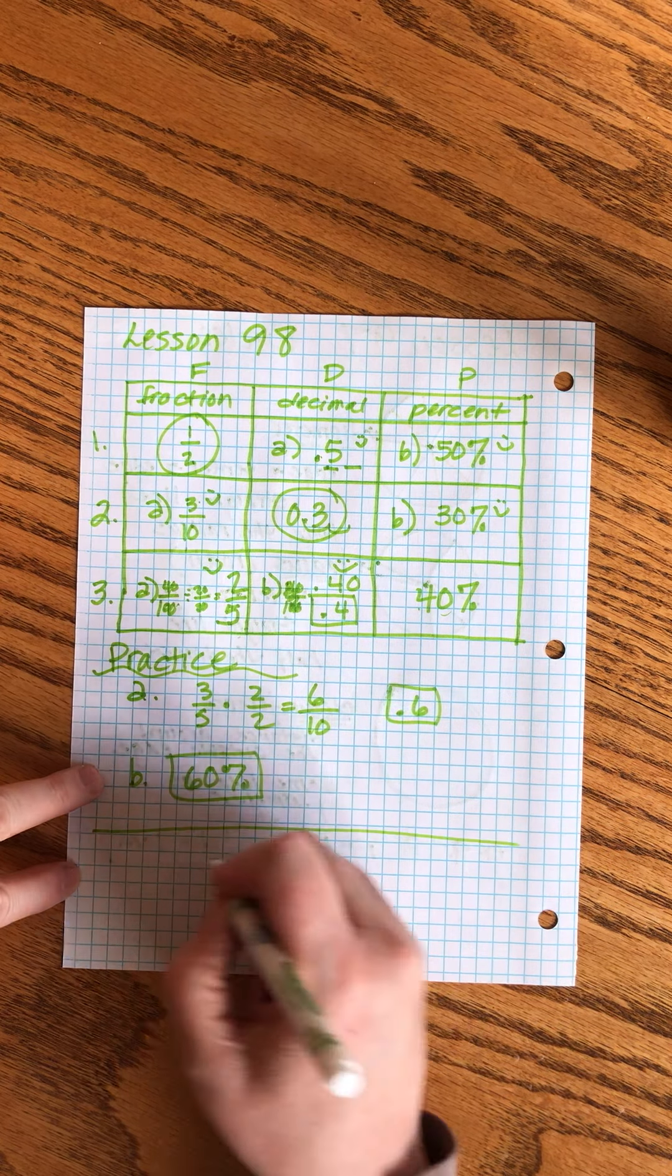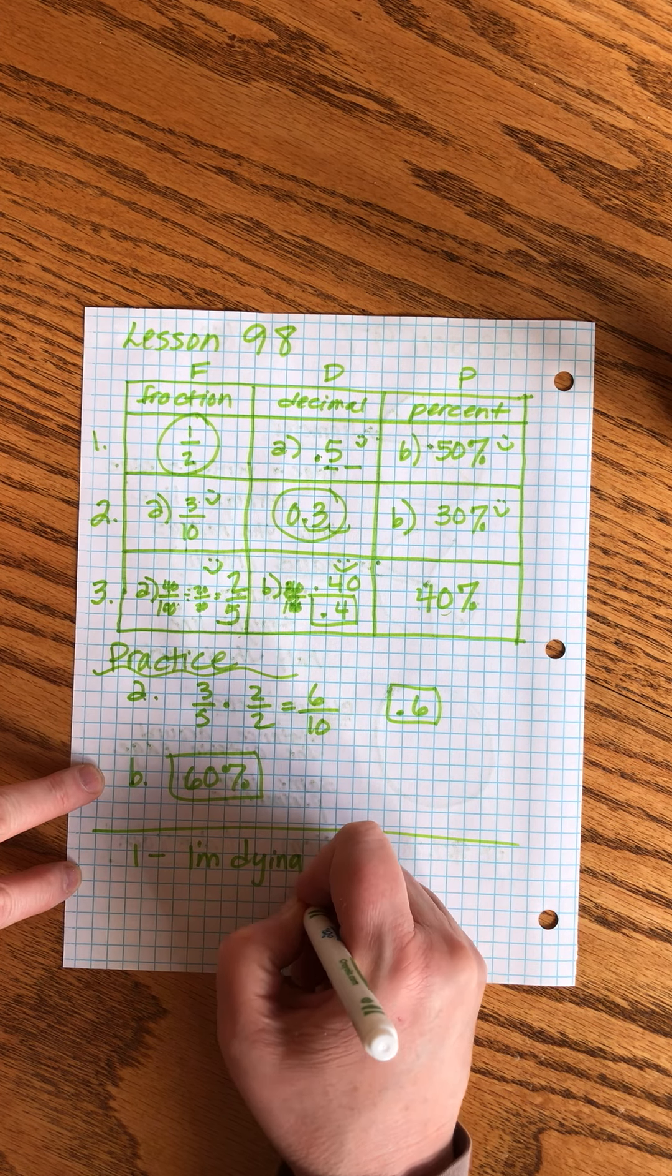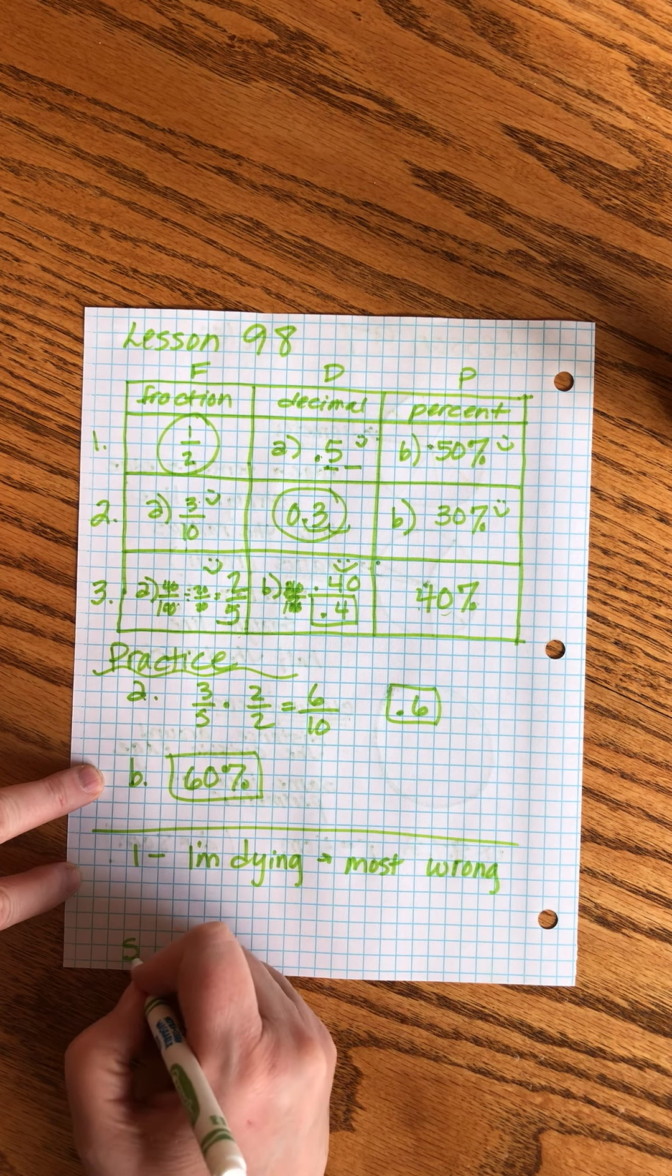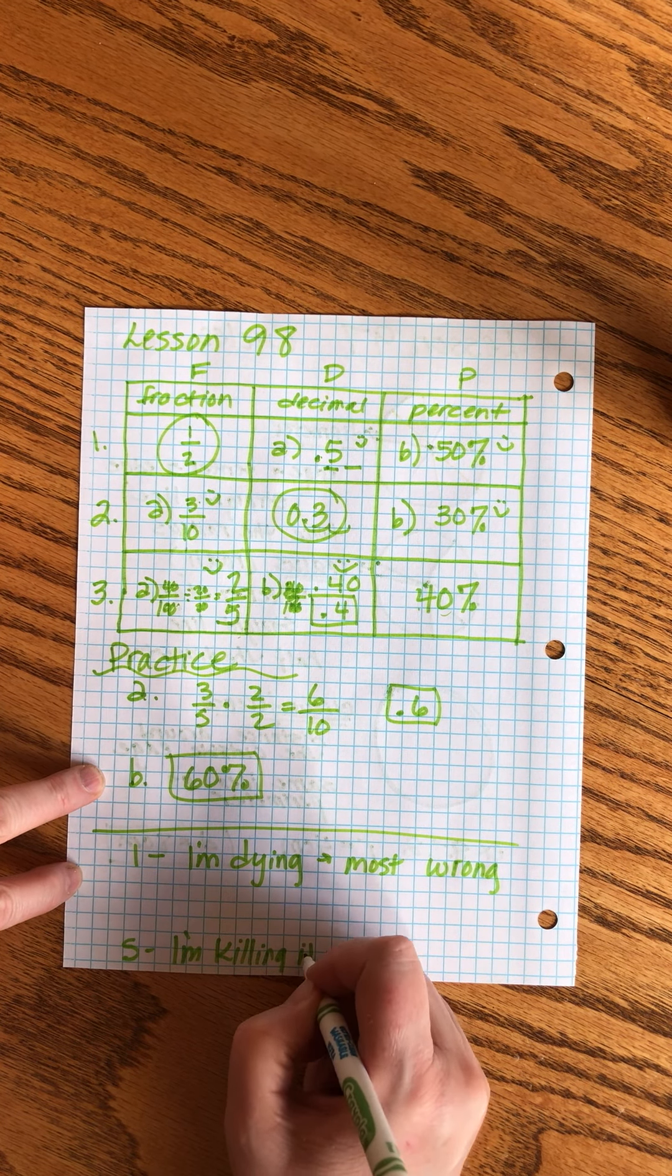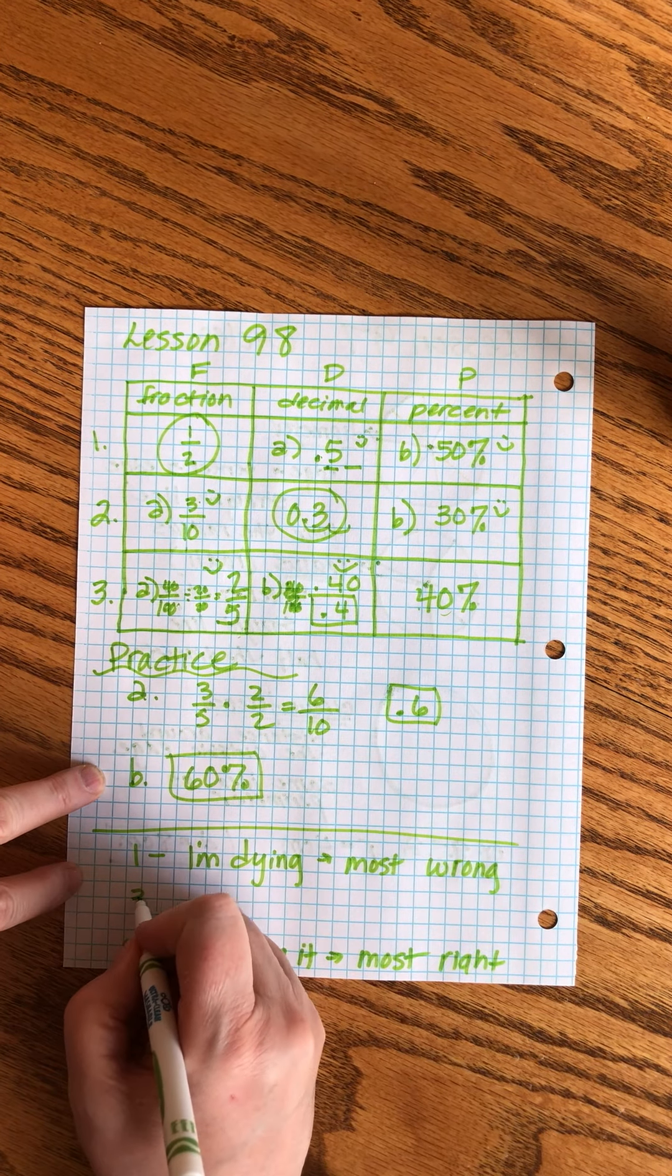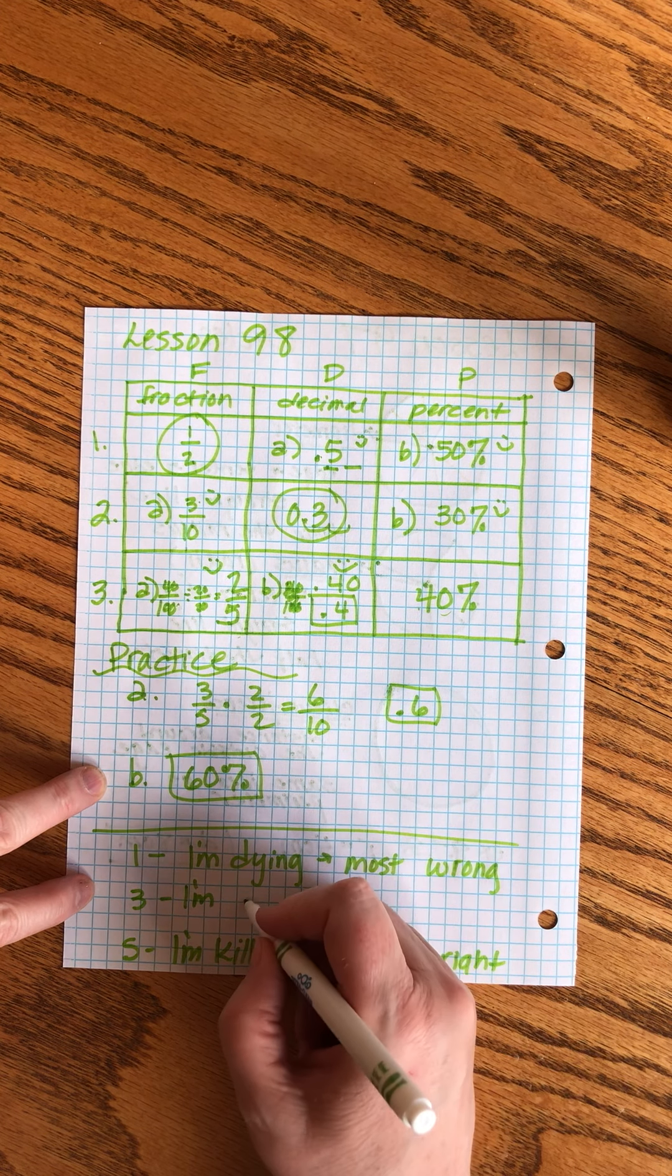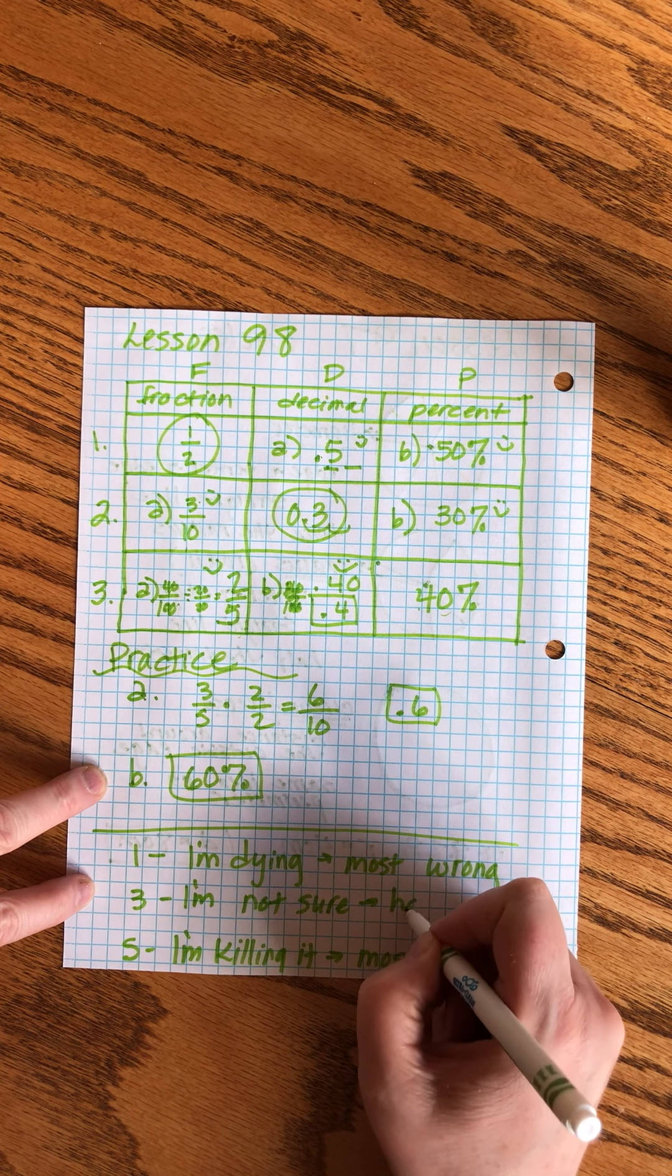One means I'm done, I usually get most problems, most of these problems wrong and I'm confused. Five means I'm killing it and I get almost all of them right. And then three means I'm not sure if I get it or not, I get about half right.